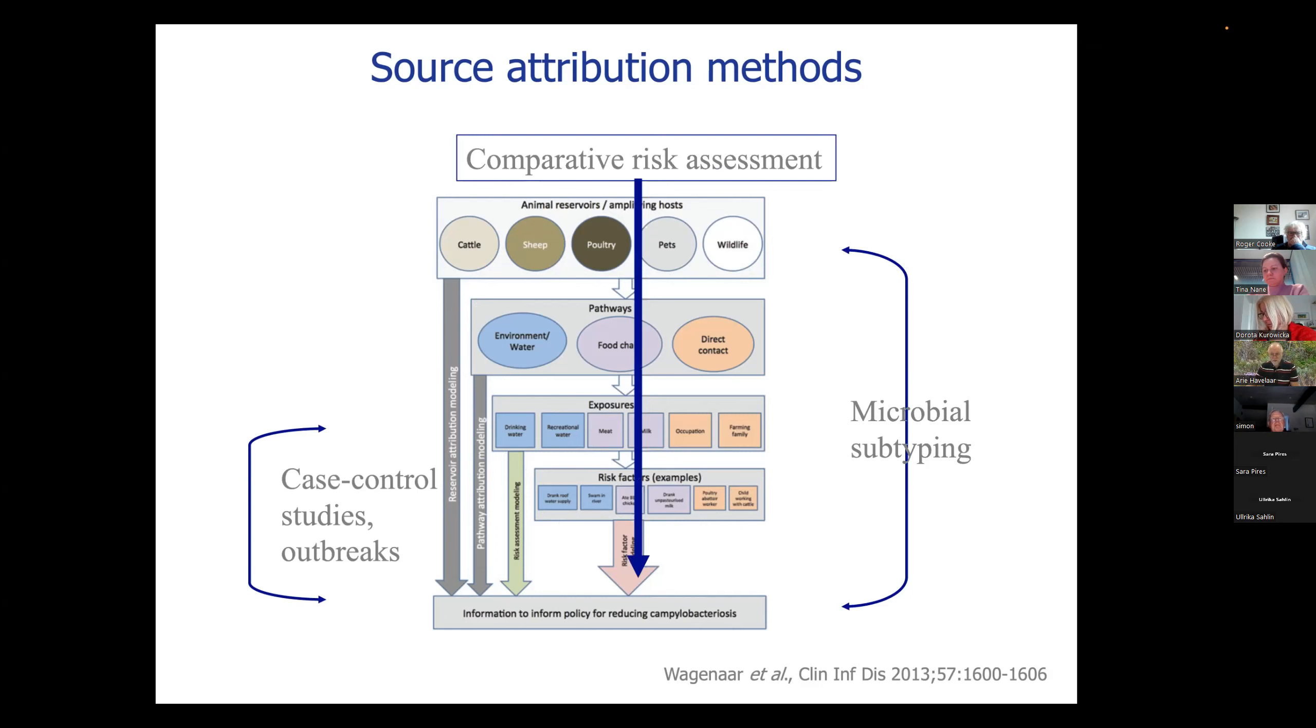On the other hand, there are studies where we compare genotypes or other typing methods of the bacteria in the reservoirs and in the humans. So they give us the big picture of what are the reservoirs, but they don't tell us anything about how do these organisms travel. And then we can do comparative risk assessments where we model the fate and the behavior of these organisms throughout the whole chain, which in theory is a method that can give us all the answers. But the data needs of these methods and the resource needs are huge. So the application is limited just by the vast volume of work and data that you need.